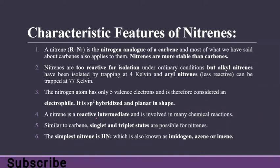A nitrine is a reactive intermediate involved in many chemical reactions. Similar to carbene, singlet and triplet states are possible for nitrines. We calculate singlet and triplet nitrines using the degeneracy formula 2S+1, where S is the total spin angular momentum. The simplest nitrine is HN — nitrogen attached with hydrogen — and it has four non-bonded valence electrons.